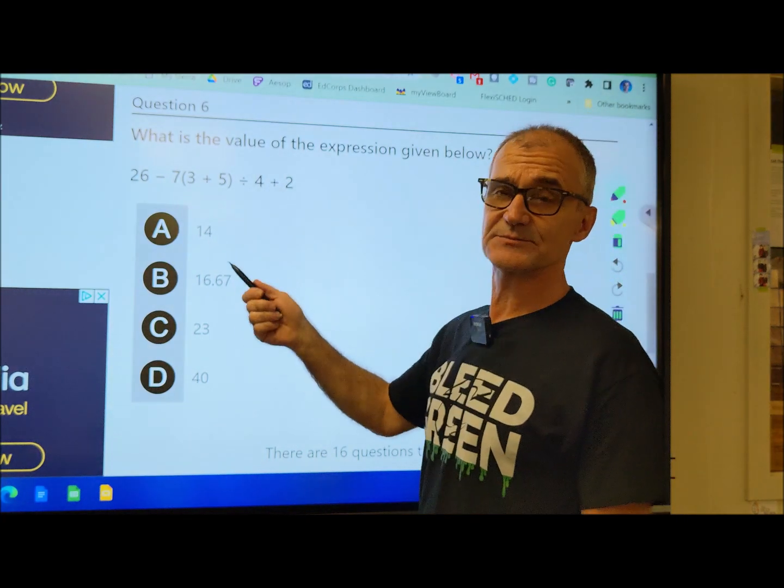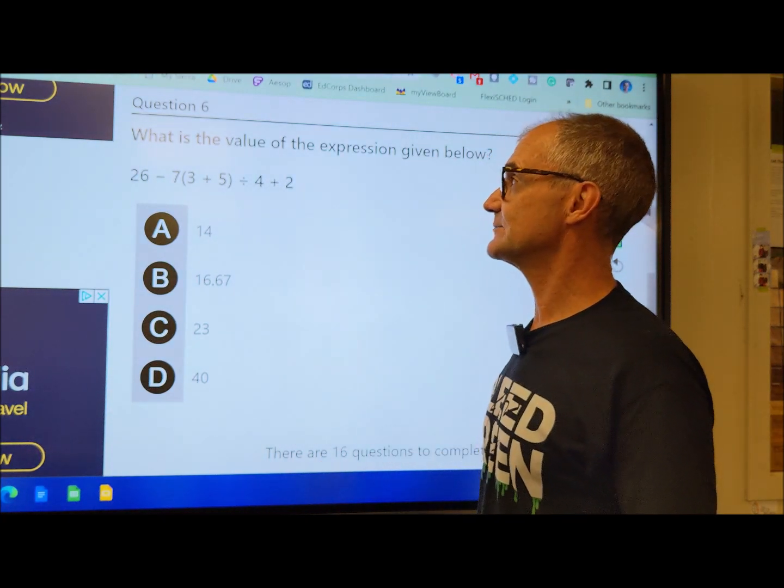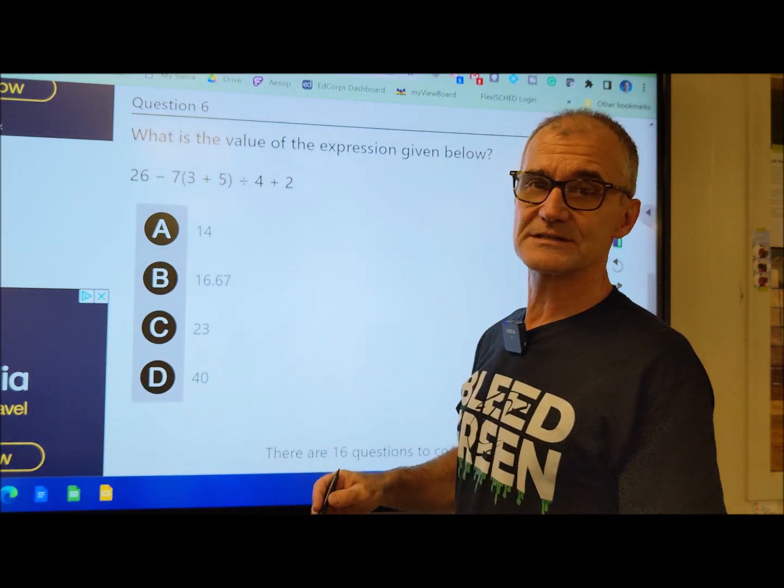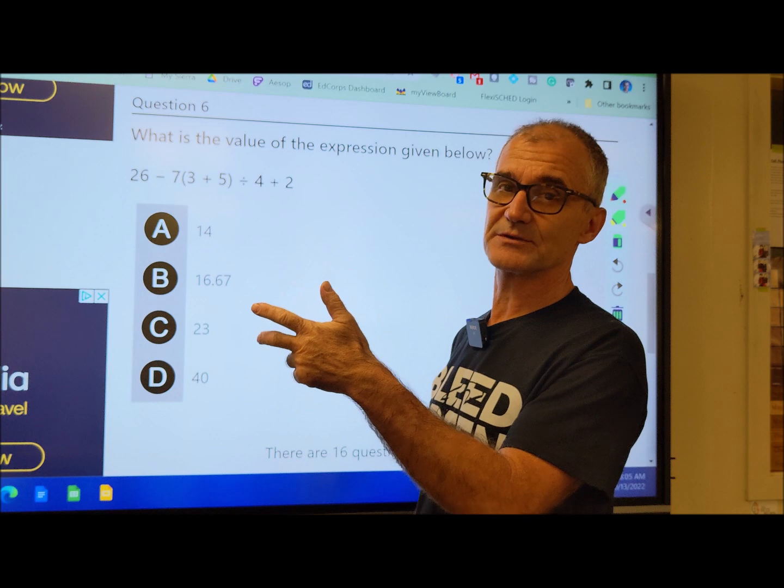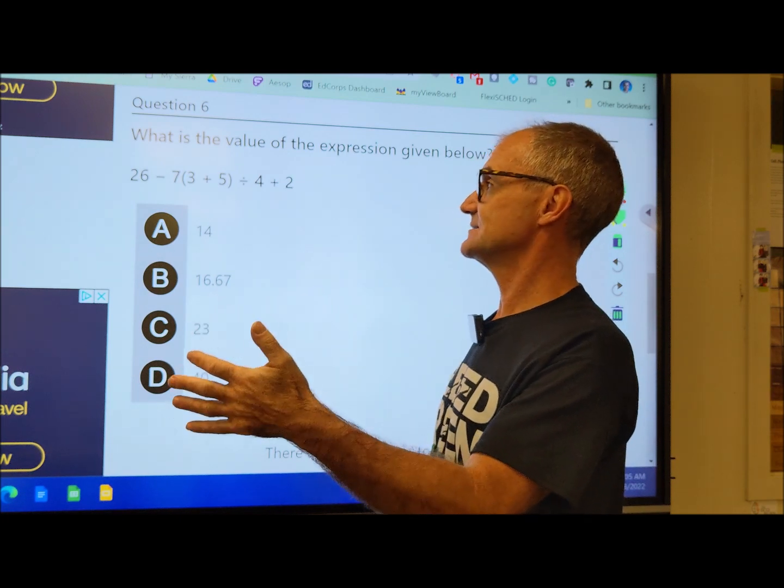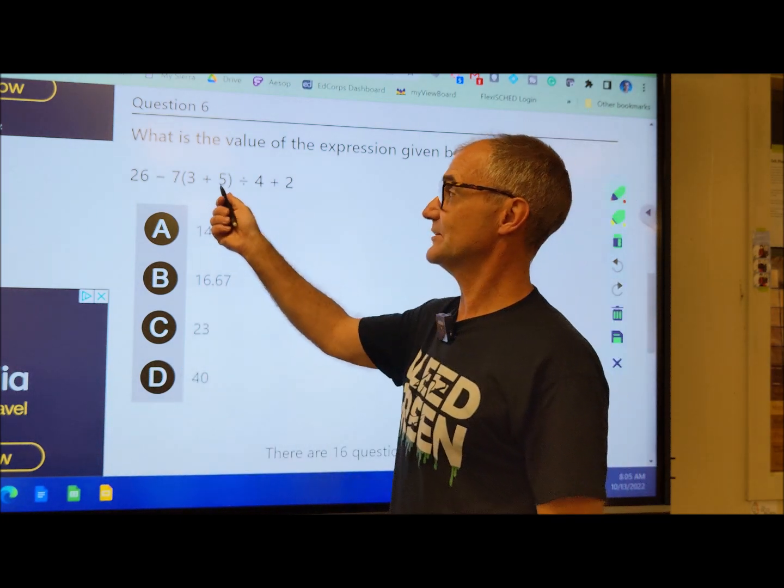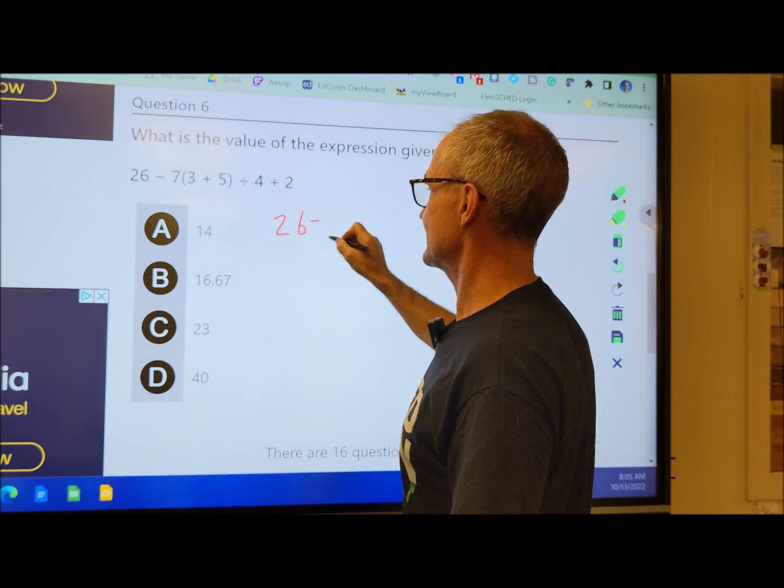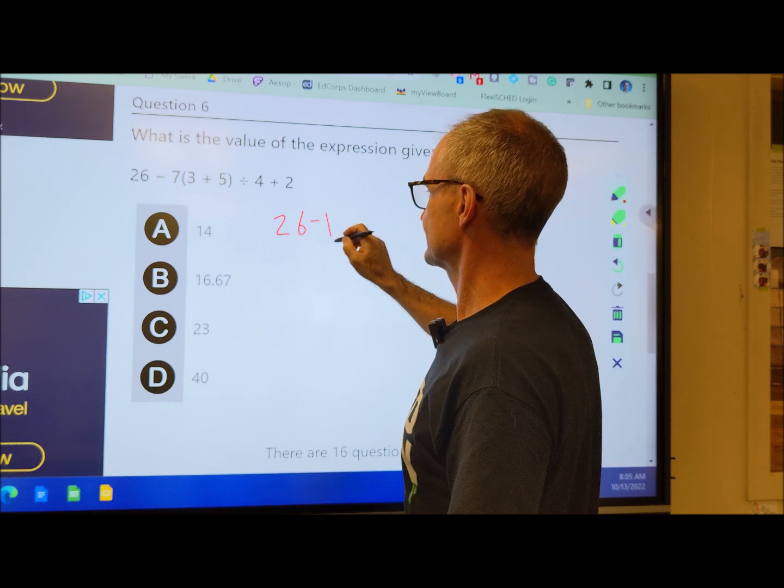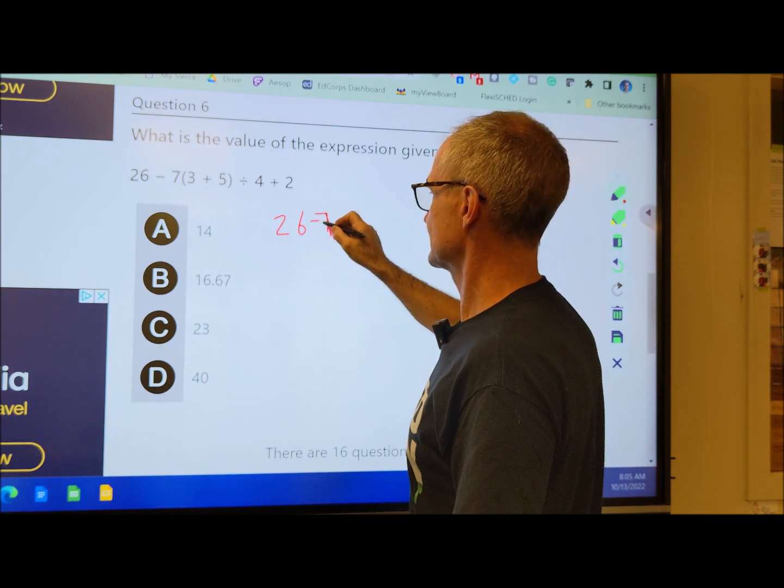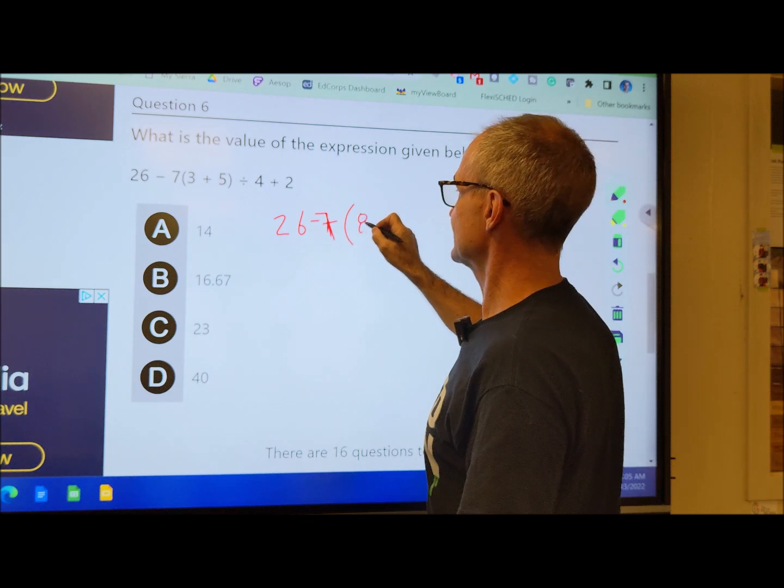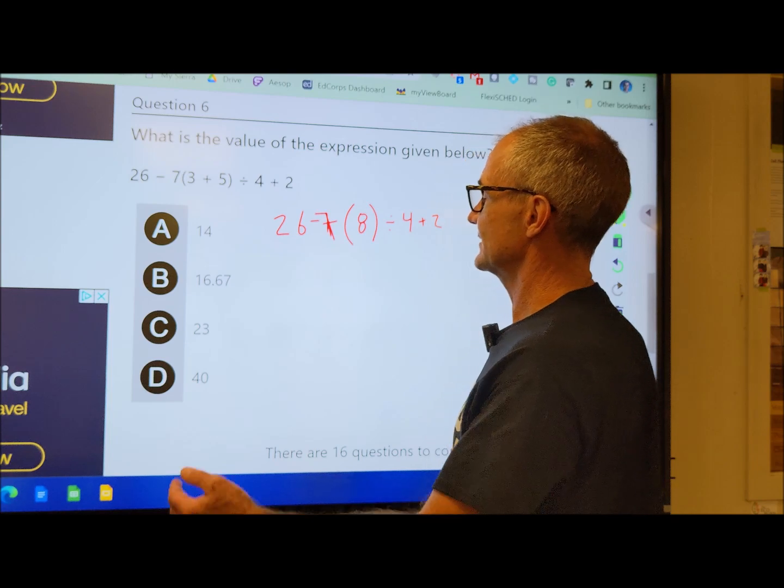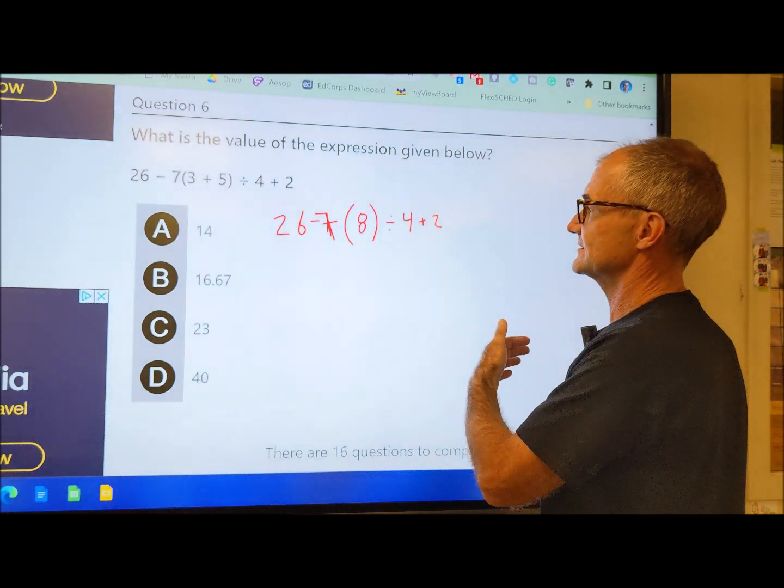Number 6. This is an expression, not an equation. There is no equal sign, so I just have to simplify it. Again, I need to know order of operations: parentheses first, then exponents, multiplication, division, addition, subtraction, left to right. So I got to do this first. That's really the check, my parentheses. So I have 26 minus 7 times 8 minus 56 divided by 4 plus 2. So now I go left to right, multiplication and division first.